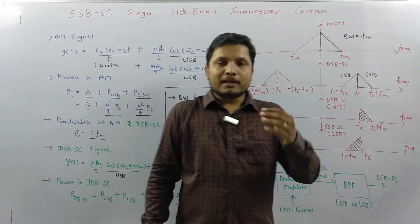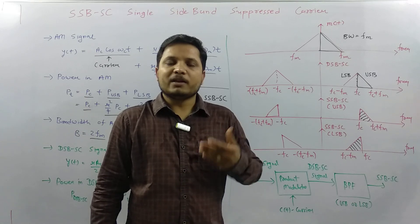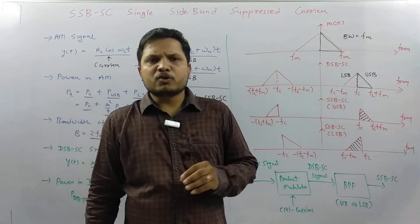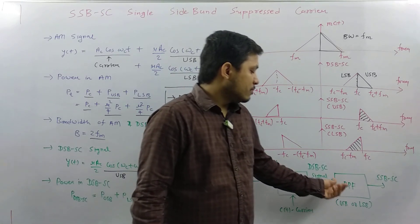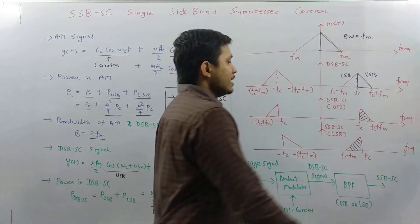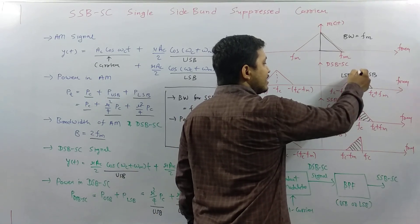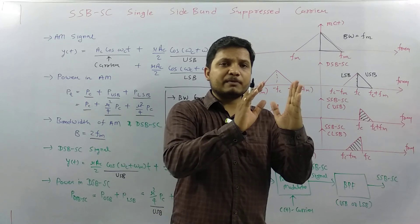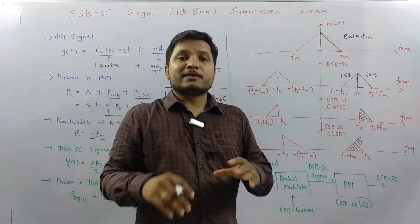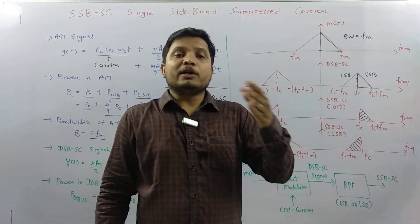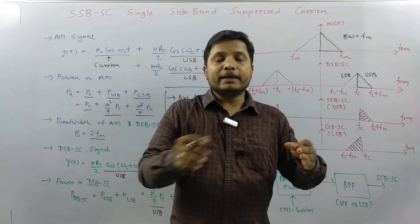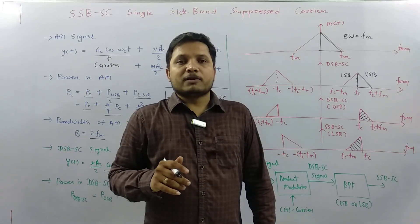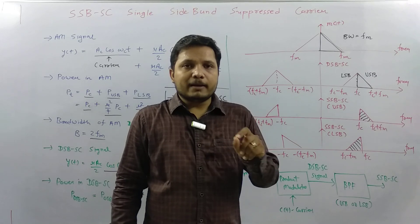There are important things to focus on when forwarding SSB-SC. We are using a bandpass filter, and it must be very sharp when filtering out either USB or LSB. The reason is the USB and LSB information in DSB-SC is symmetric with respect to the carrier. If the bandpass filter is not sharp enough, some information from USB may leak into LSB or vice versa, creating phase and frequency distortion.